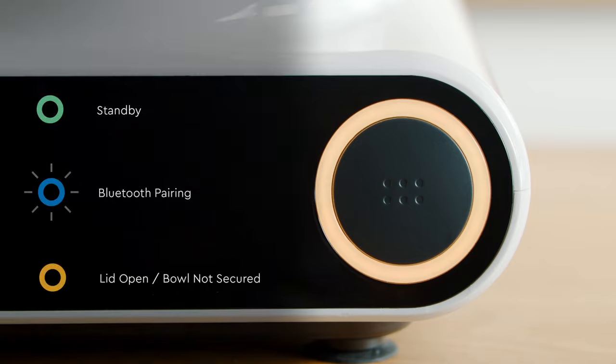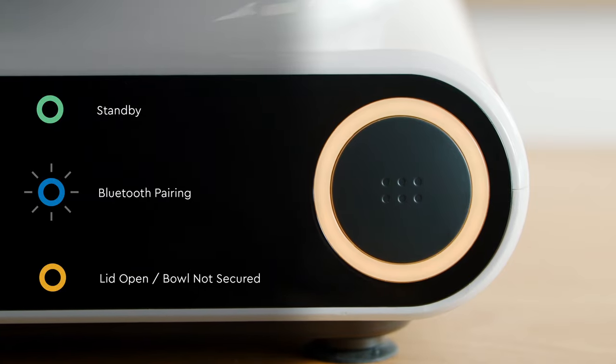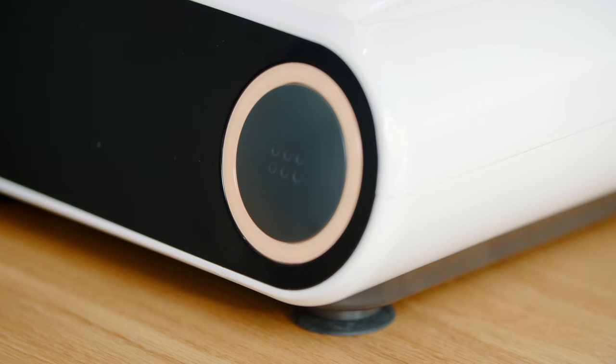On the front, we have our control button, which you might notice is now orange. As things cook or as we connect the lid, that will change color. The green color means it's functional. We are ready to go.